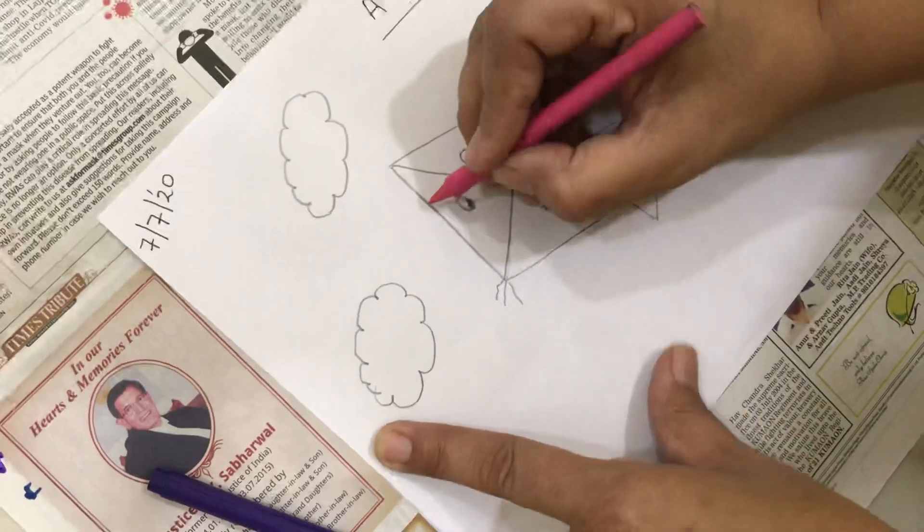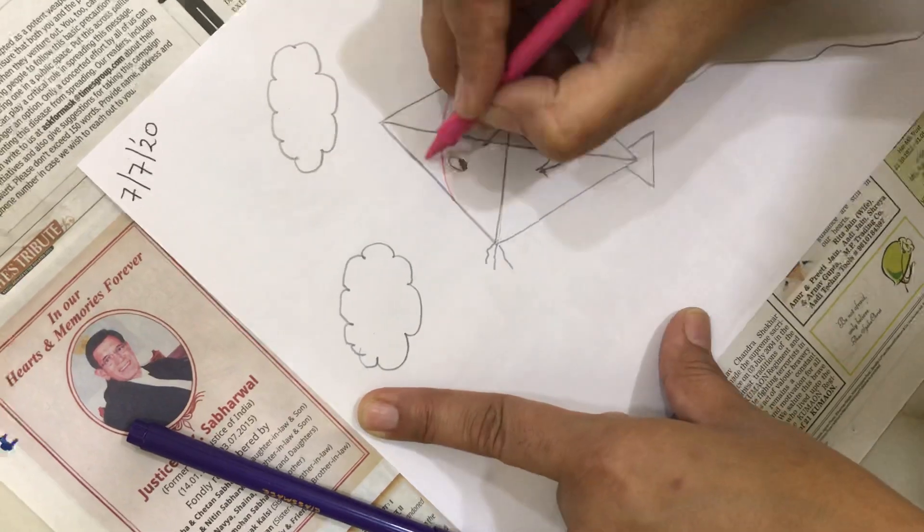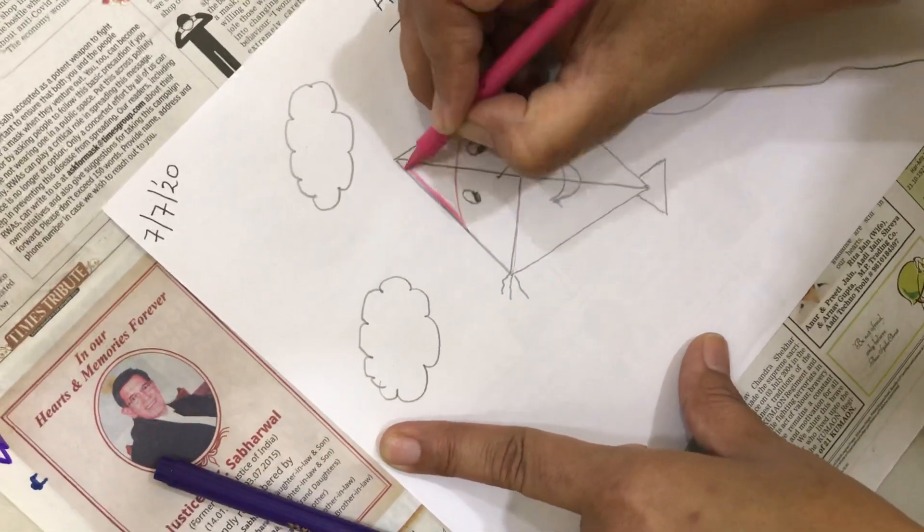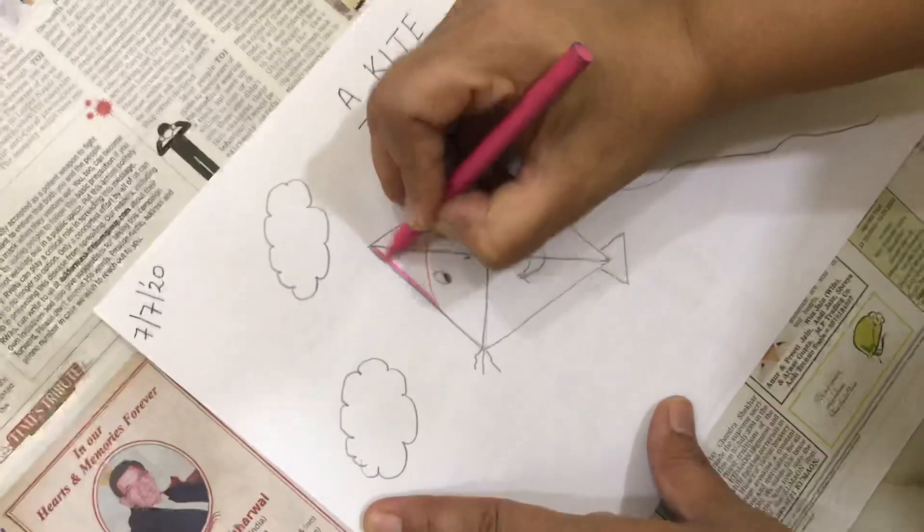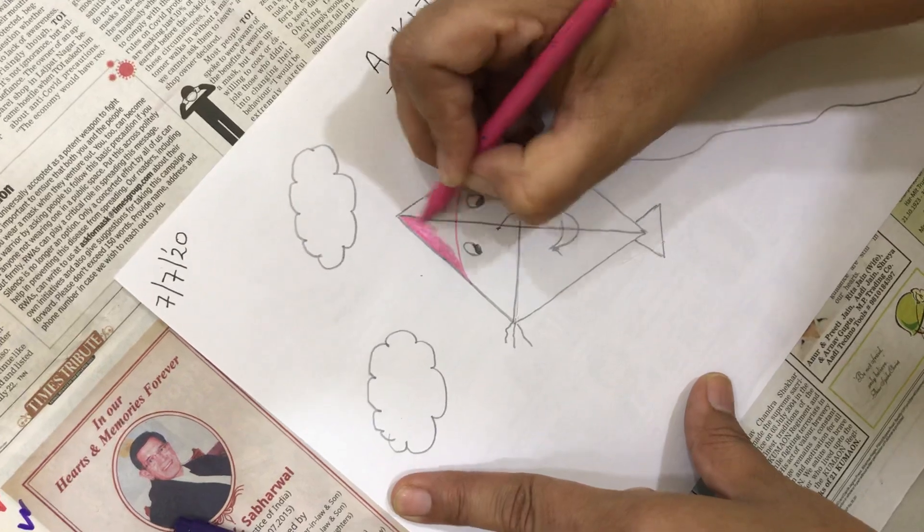We can also color it in different ways. Maybe we could change the colors in between. But as I just shared with you, you must go in one direction. Your color must not go out of your drawing.